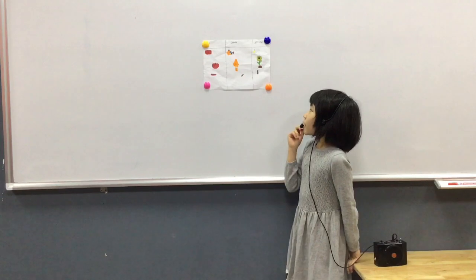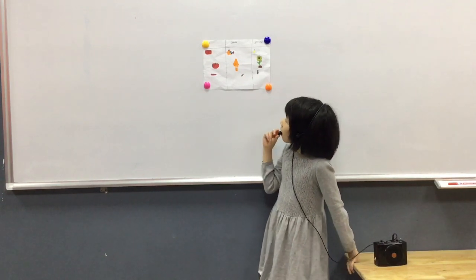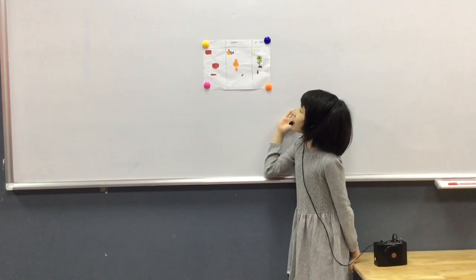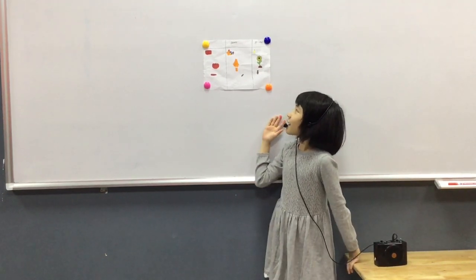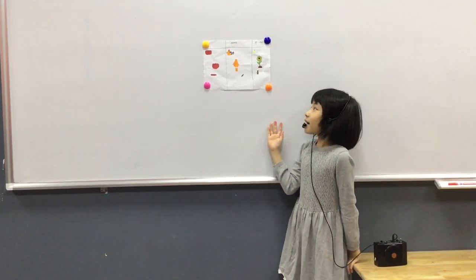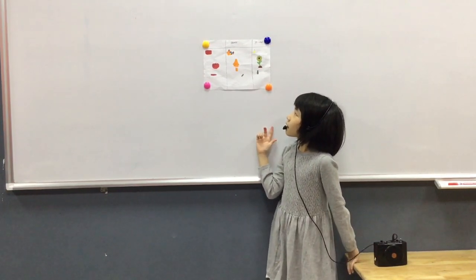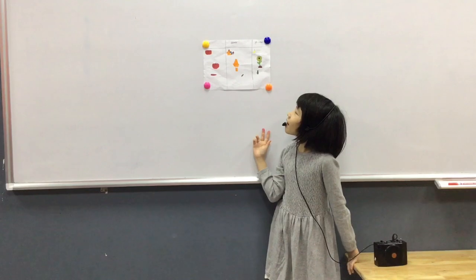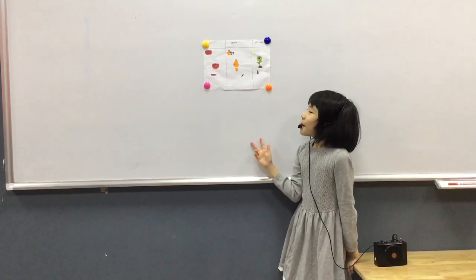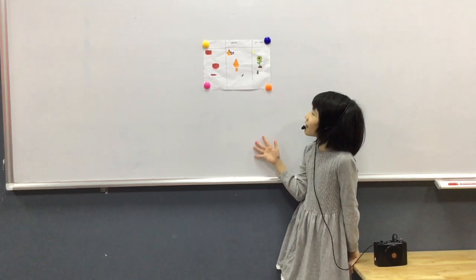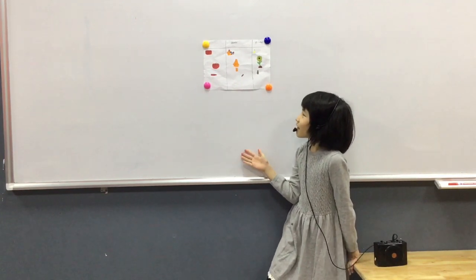My second color is orange. Orange is a secondary color. In my orange chart there is an orange crayon and an orange carrot.